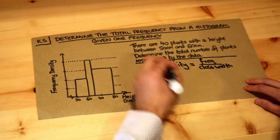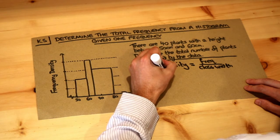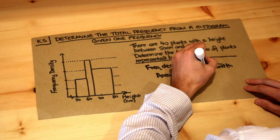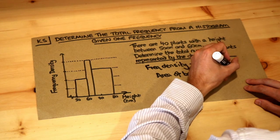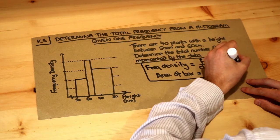And the other key formula was that the area of a bar represents the frequency of that interval. So those are your two key formulae.